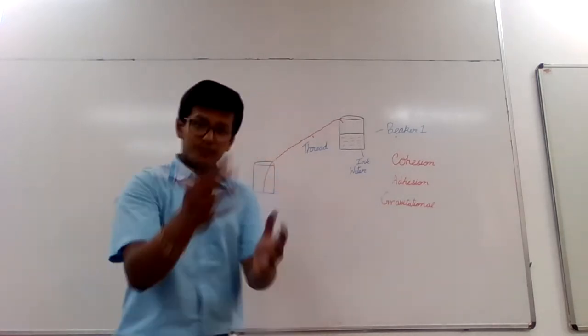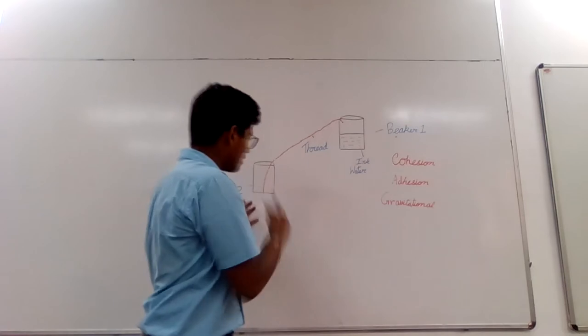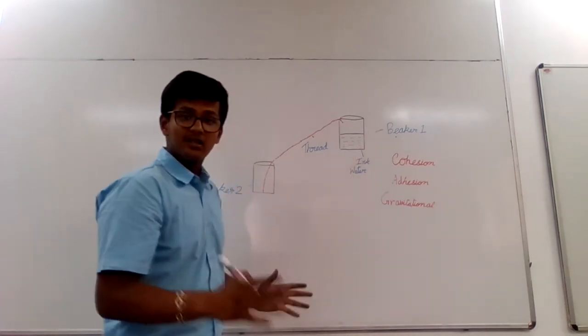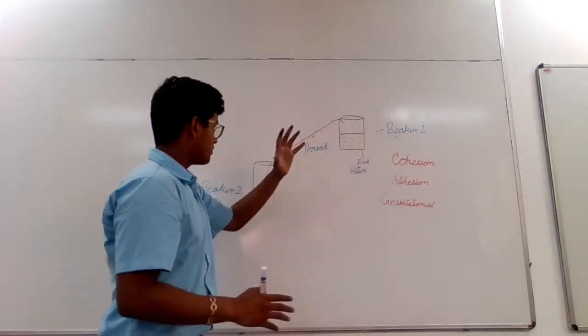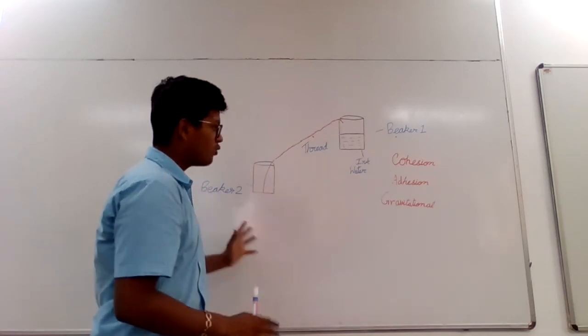The third was the gravitational force which is pulling the ink water towards the beaker 2 from beaker 1. That is the main principle which helped us in transferring the ink water in beaker 1 to beaker 2 without falling.